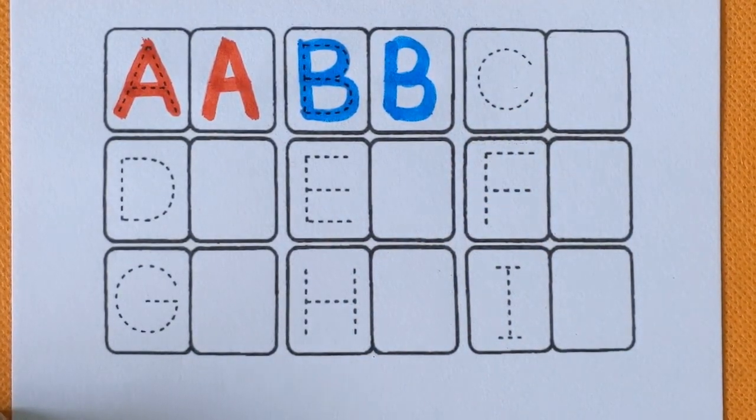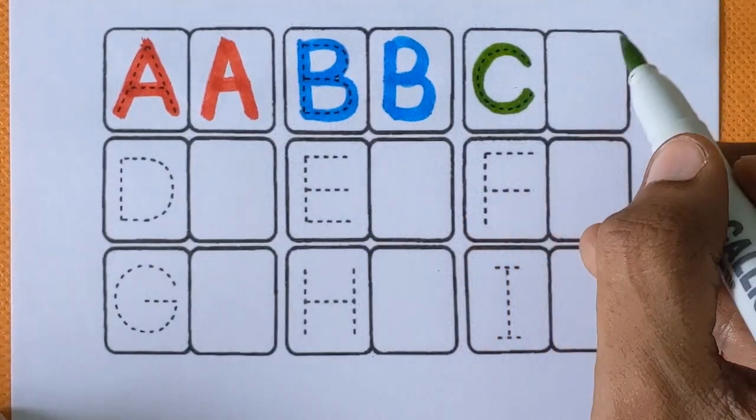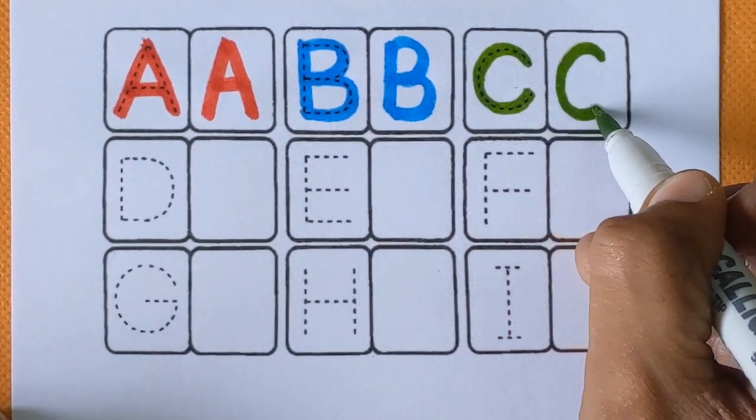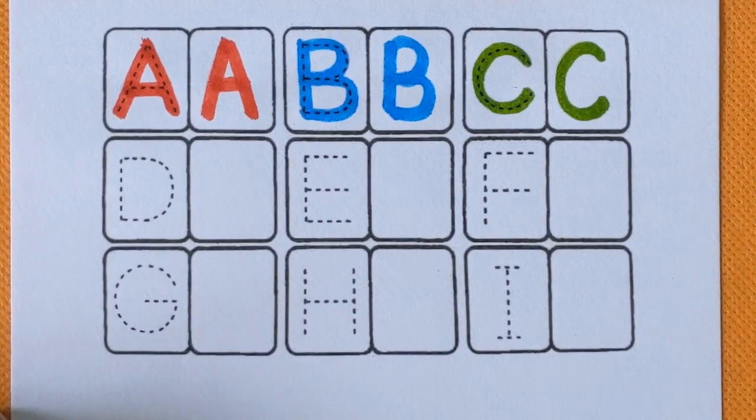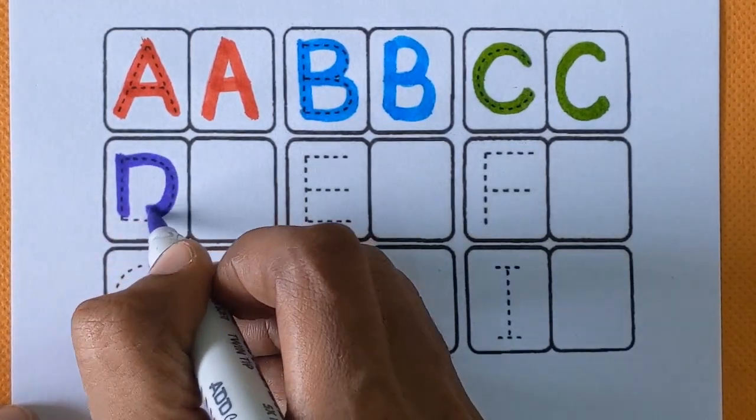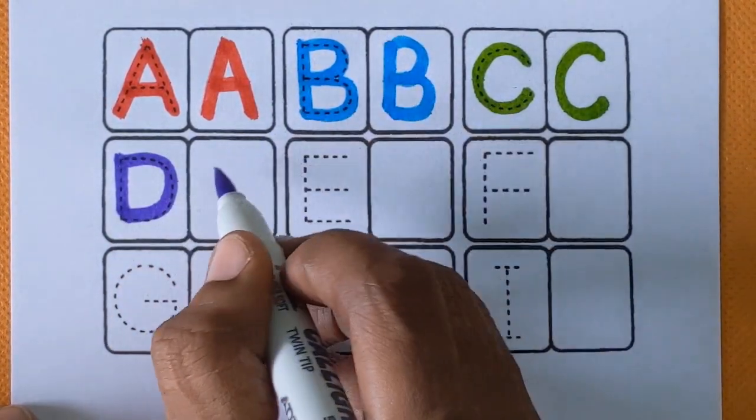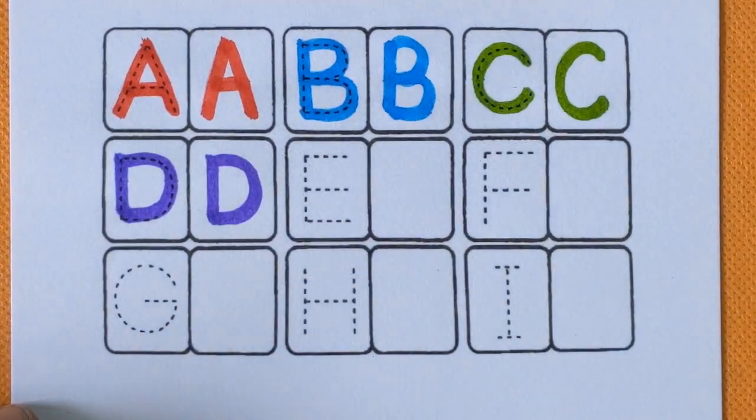Next is alphabet C, C for camel and C for carrot, light green color. After C, next is alphabet D, D for doll and D for dog, violet color.